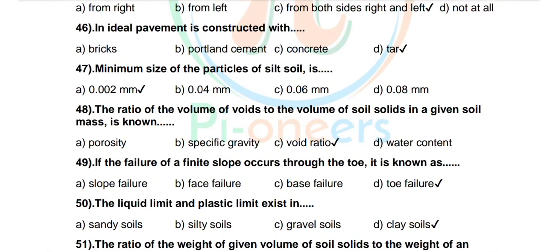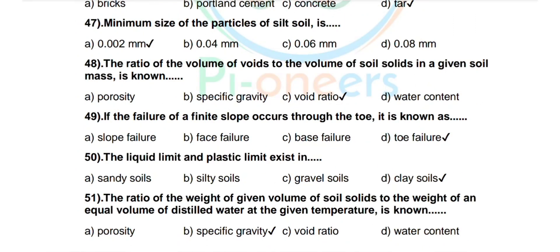Question 49: If the failure of a finite slope occurs through the toe, it is known as — options: slope failure, face failure, base failure, toe failure. Correct answer: toe failure. Question 50: The liquid limit and plastic limit exist in — options: sandy soils, silty soils, gravel soils, clay soils. Correct answer: clay soils.